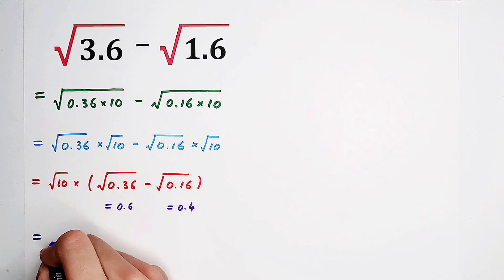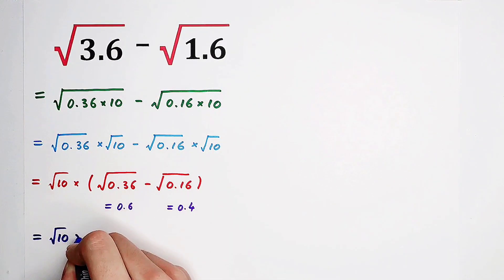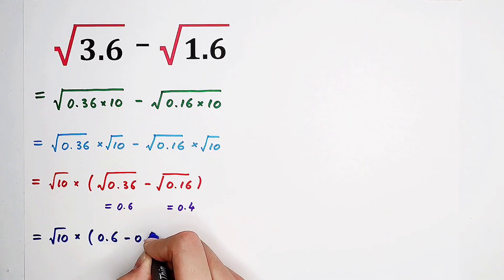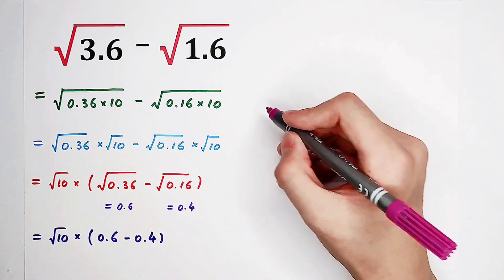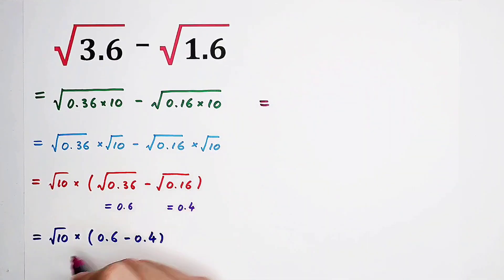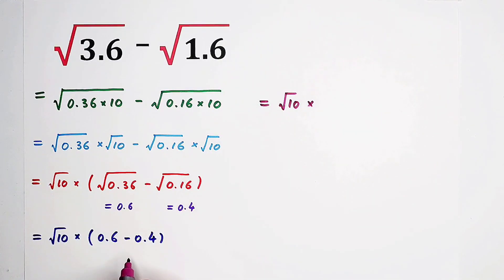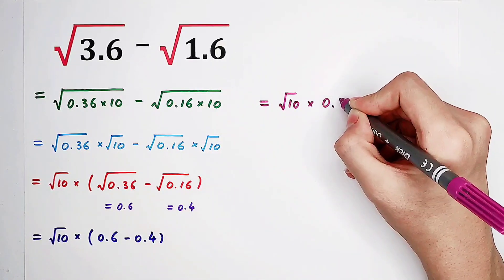In the end, it is square root of 10 times 0.6 minus 0.4. Then, it is square root of 10 times 0.2.